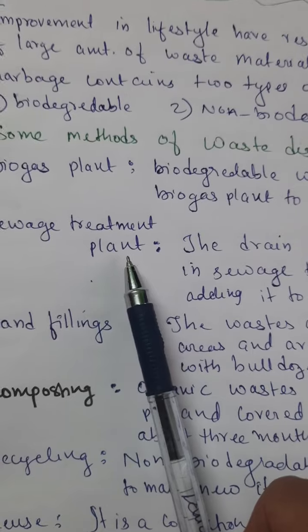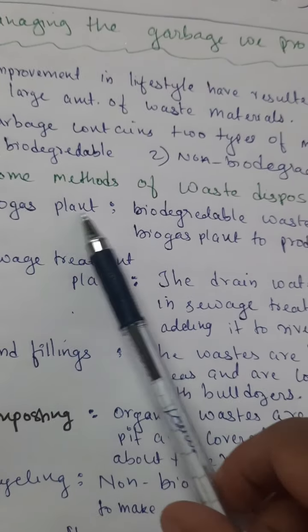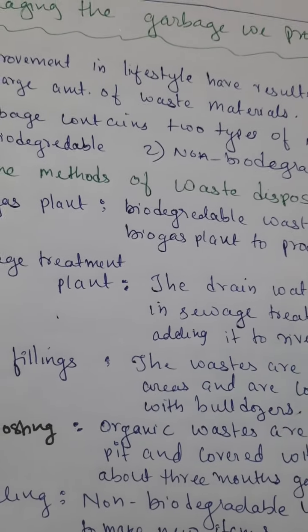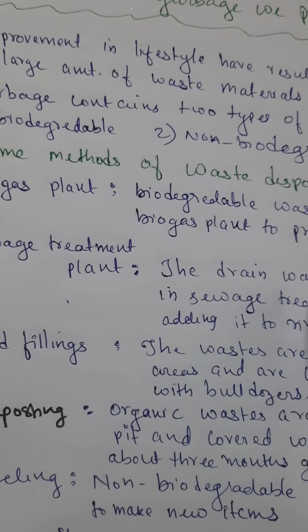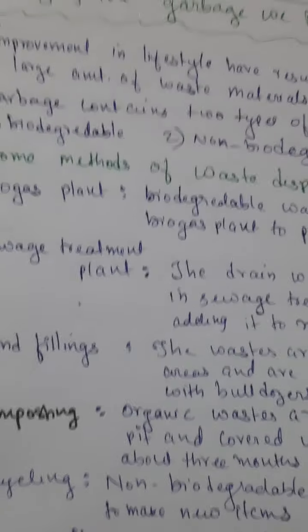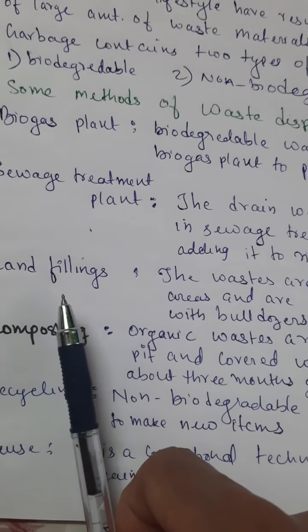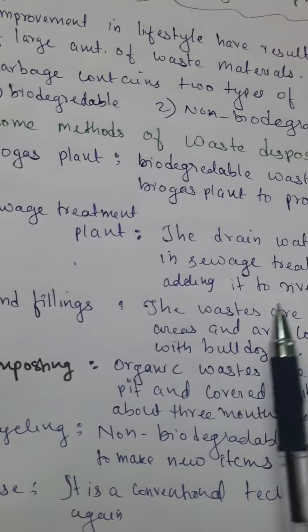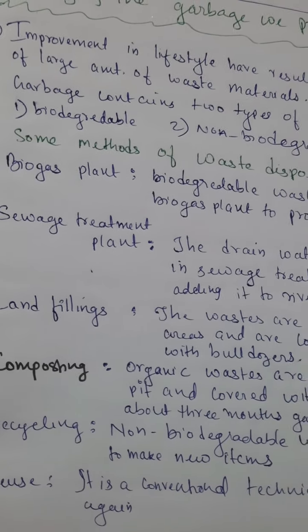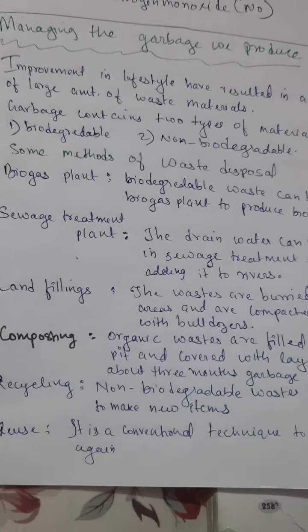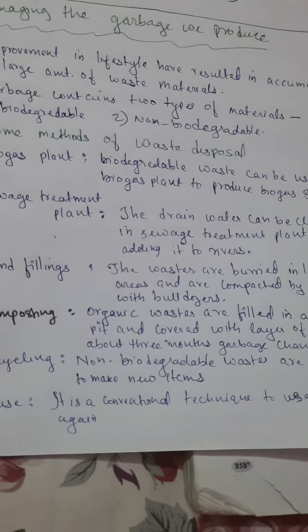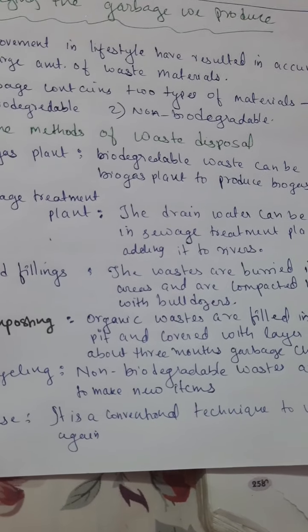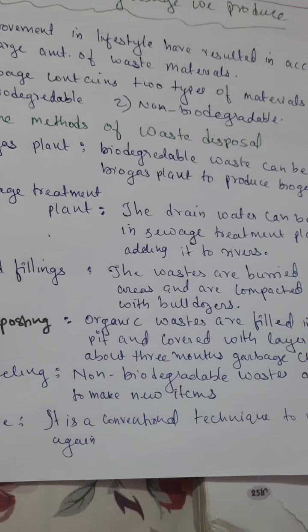Next is a sewage treatment plant — these are big factories where drain water containing sewage can be cleaned and then released into rivers. Next is landfills. In such landfills, wastes are buried in low-lying areas and compacted by rolling with bulldozers. Waste is dumped in the low-lying area, buried by soil, and a bulldozer runs over it, making it compact. Then again it is filled with waste and compressed — this cycle continues in landfills.